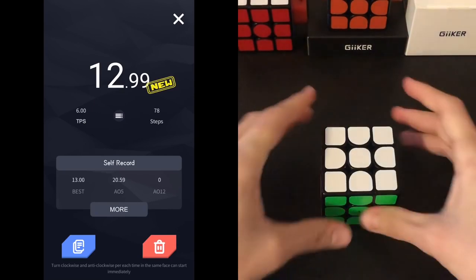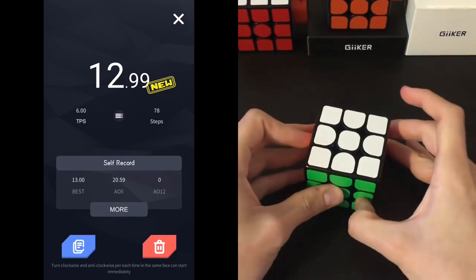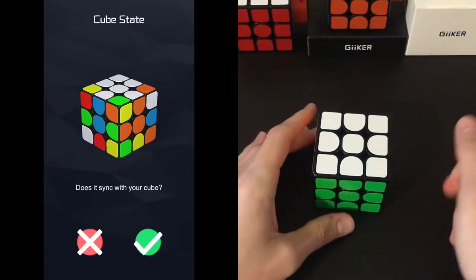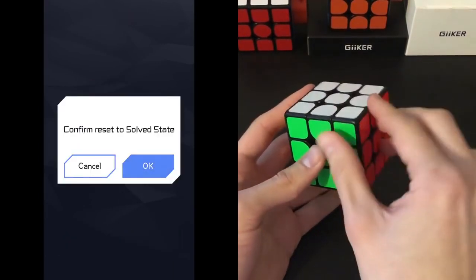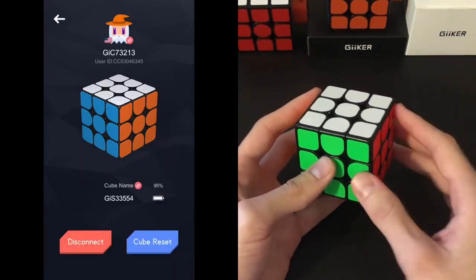So if your cube is solved right here and it doesn't show that it's solved on the actual app, all you have to do is go back to the home screen, click on the top right, all you have to do is click reset. And then that lets the app know that the cube is actually solved and then it'll reset the entire thing.